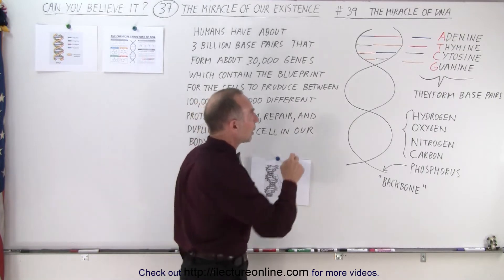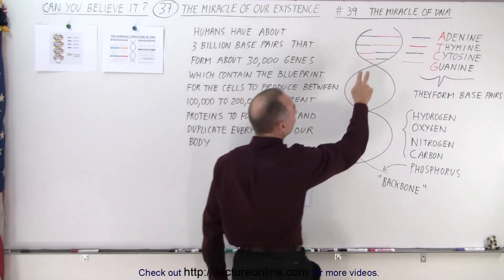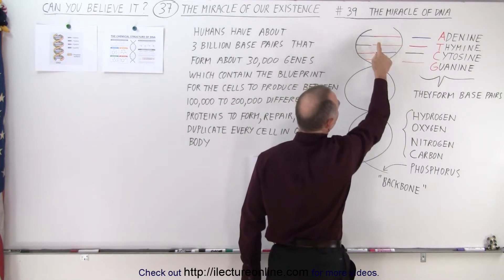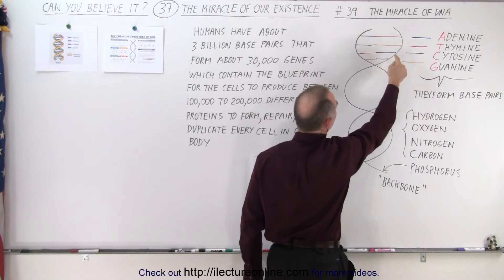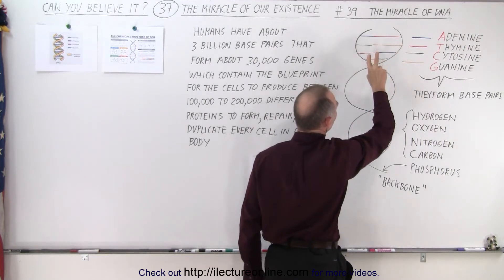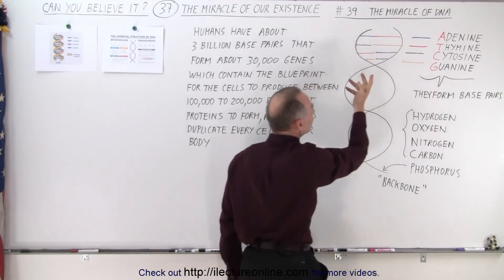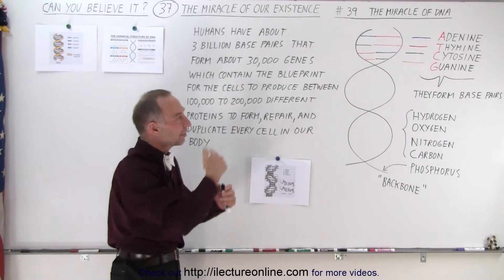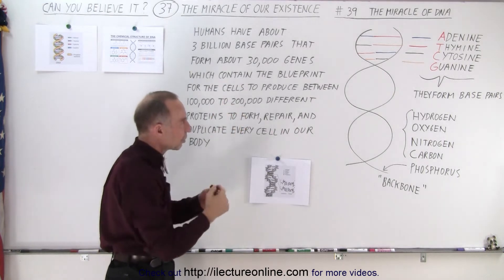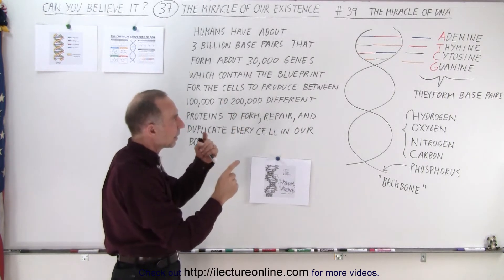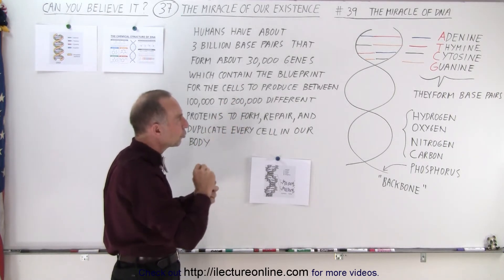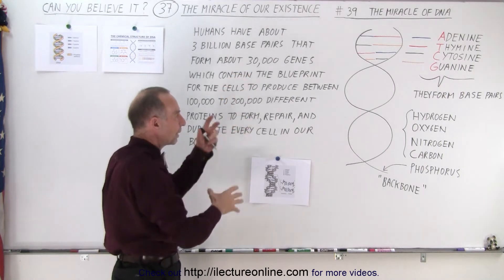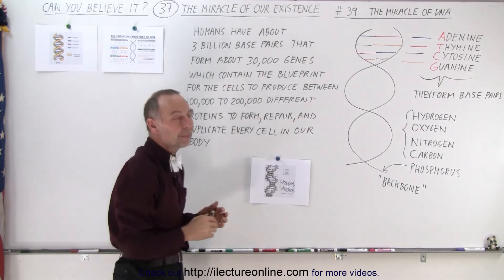They always go in twos: adenine connects to thymine, and cytosine connects to guanine, over and over again in various combinations. It doesn't repeat itself in that structure, but it will always be those two pairs all the way through in various combinations.